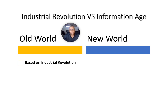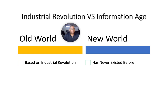Now we're far enough into this new revolution that we're experiencing things that have never existed before — technologies not based on anything we previously knew. There's no prior technology that let you send a message to a president and get an immediate reply, see flooding on another continent the same day it happens, or sit on your couch, order food, and have it arrive within 30 minutes. We're no longer basing what we do on the Industrial Revolution.